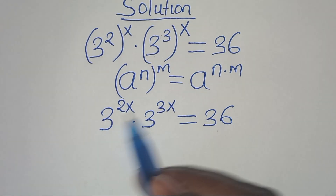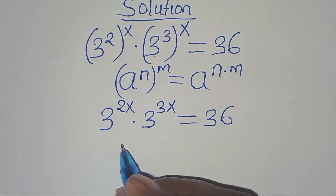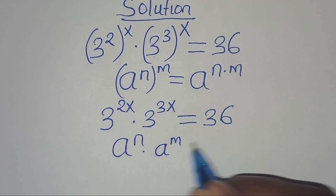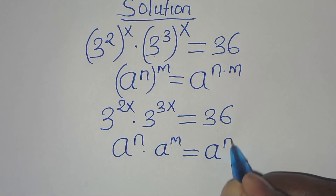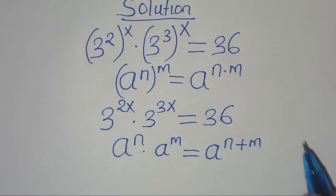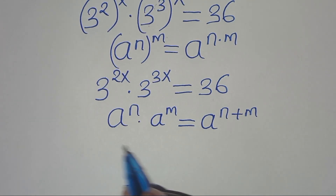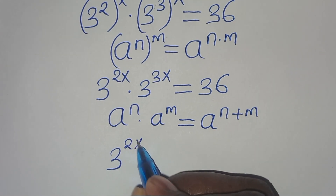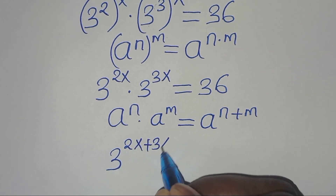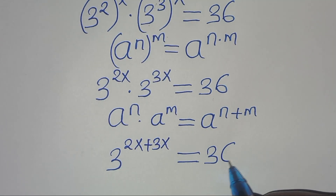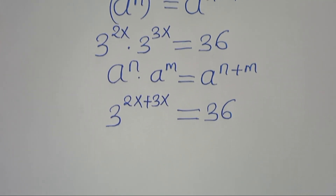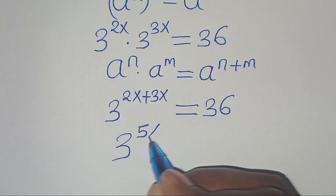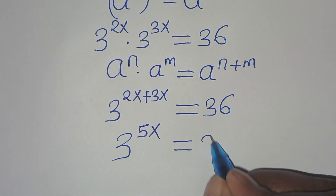Now 3^(2x) times 3^(3x) is in the form of a^n times a^m, which we can express as a^(n+m). Applying this exponent property, we have 3 to the power of 2x plus 3x, which simplifies to 3 to the power of 5x, equals 36.